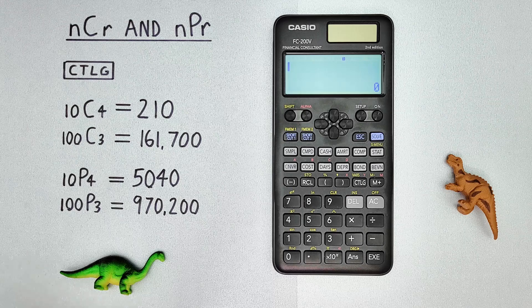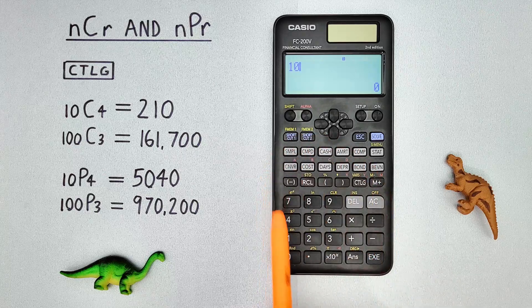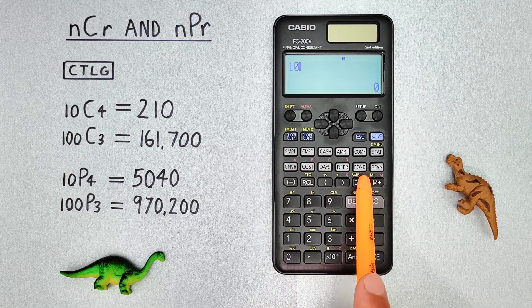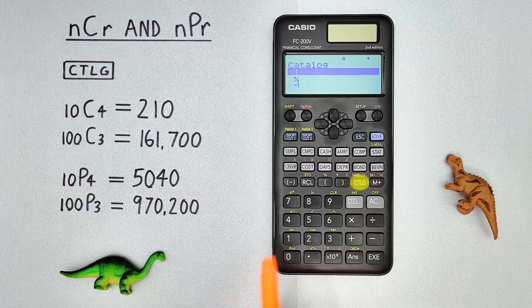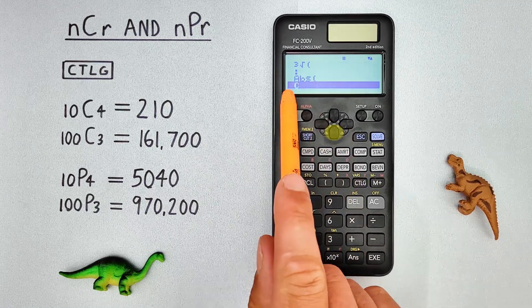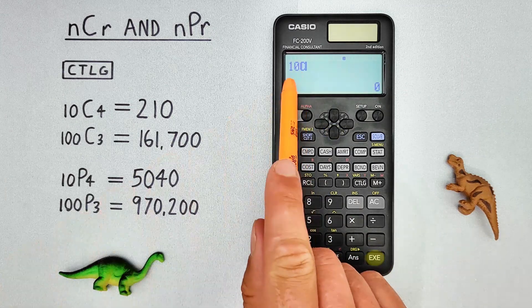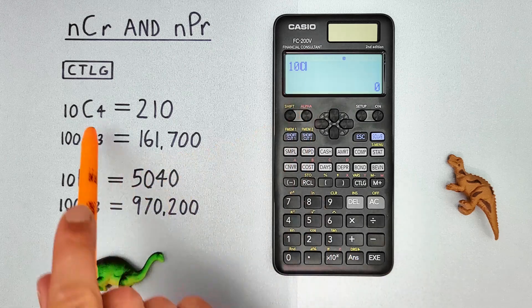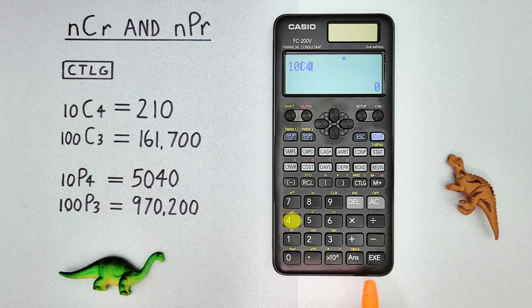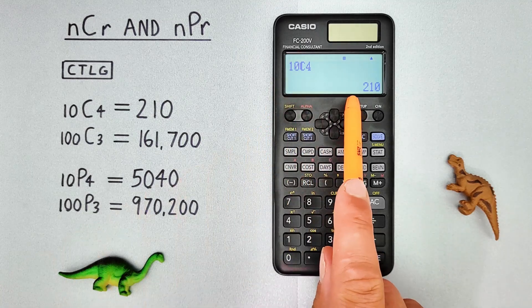To solve this on this calculator, first we enter the 10. Now we see there's no button for combinations here, so what we do is go to Catalog and then scroll down until we see C here. Select that. Now we have 10, combination, 4. Hit EXE. And we see we get a result of 10 choose 4 combinations equals 210.